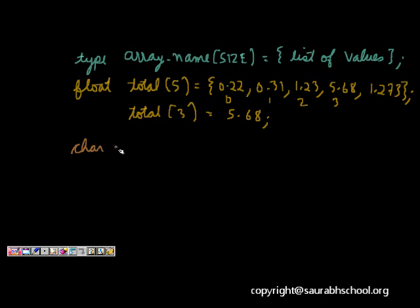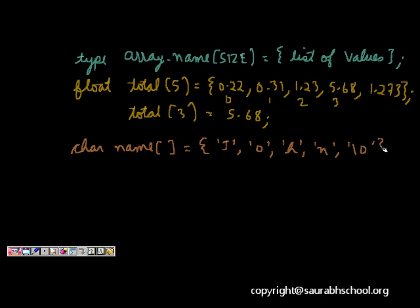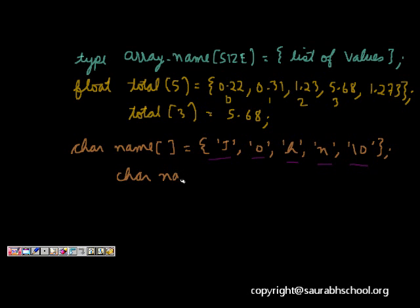Now let's see another example. I write char name[] without giving any index. Then I write {'j','o','h','n','\0'}. Because I have not defined the maximum number of elements, enough memory will be allocated to store all these values. The size will be 5, equivalent to char name[5].